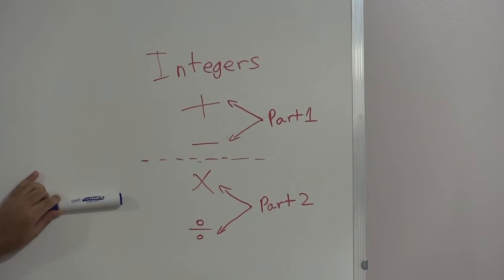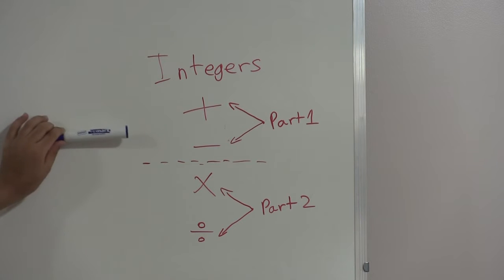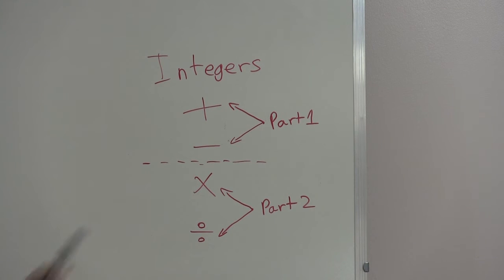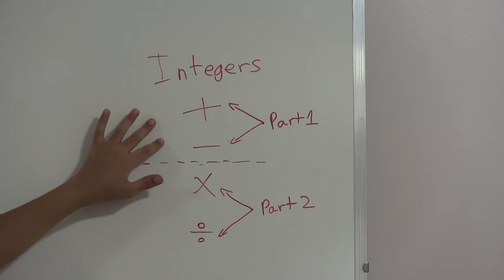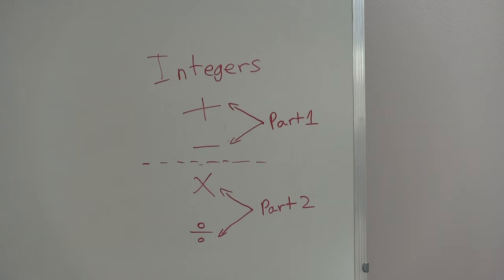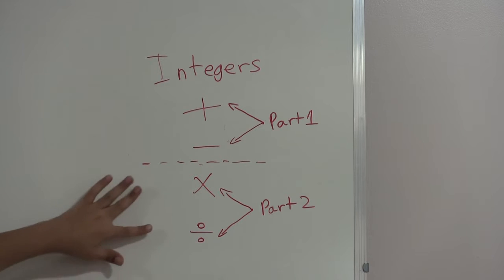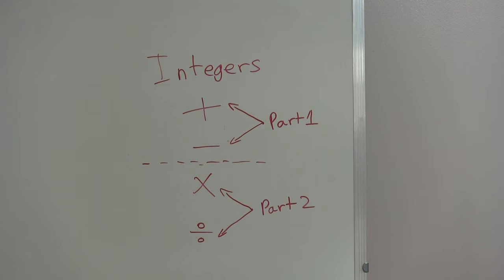You might think multiplication and division are simpler, but you'd be wrong. In school they often teach addition and subtraction first because there are only positive numbers involved, so those can seem easier. However, when you introduce negative numbers into the mix, you need a more systematic and foolproof approach, and that's where multiplication and division come in. There's one defined set of rules to follow, whereas addition and subtraction are more abstract.